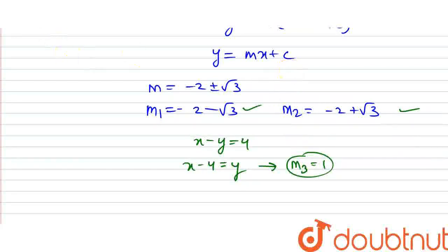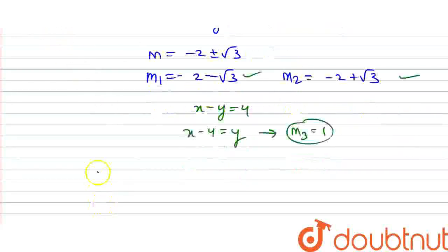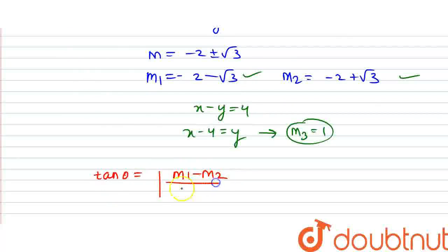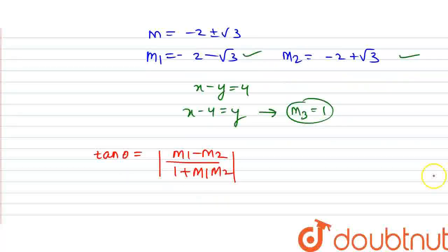So now what do we do? We have three slopes, and from slopes we can find angles. We use the formula: tan theta equals (m1 minus m2) divided by (1 plus m1 times m2). Let's compute this for m1 and m2.